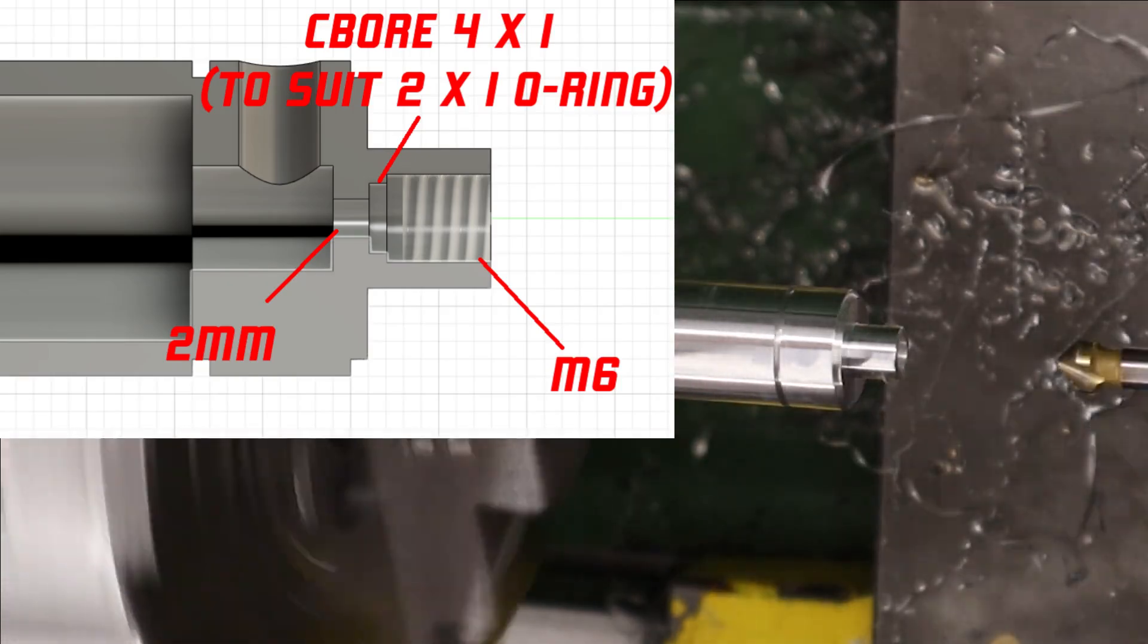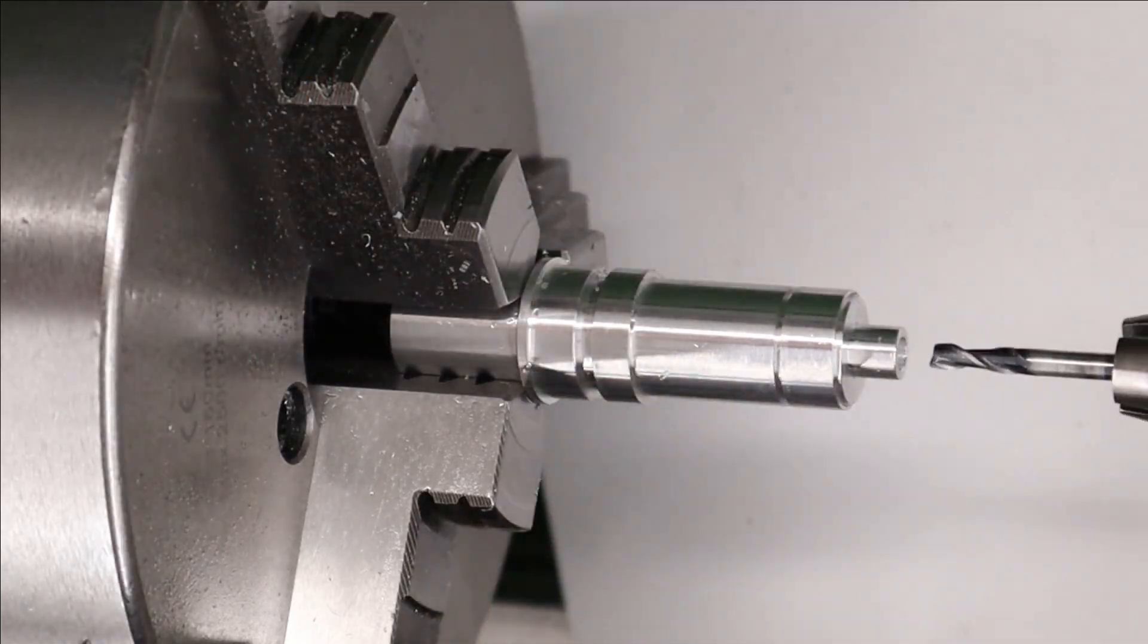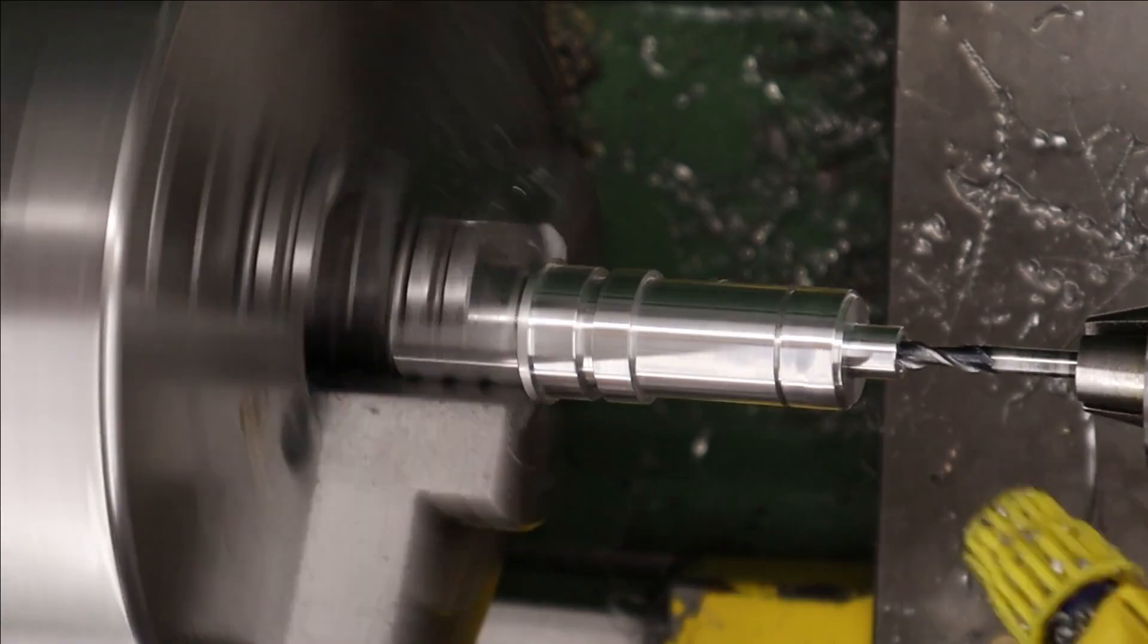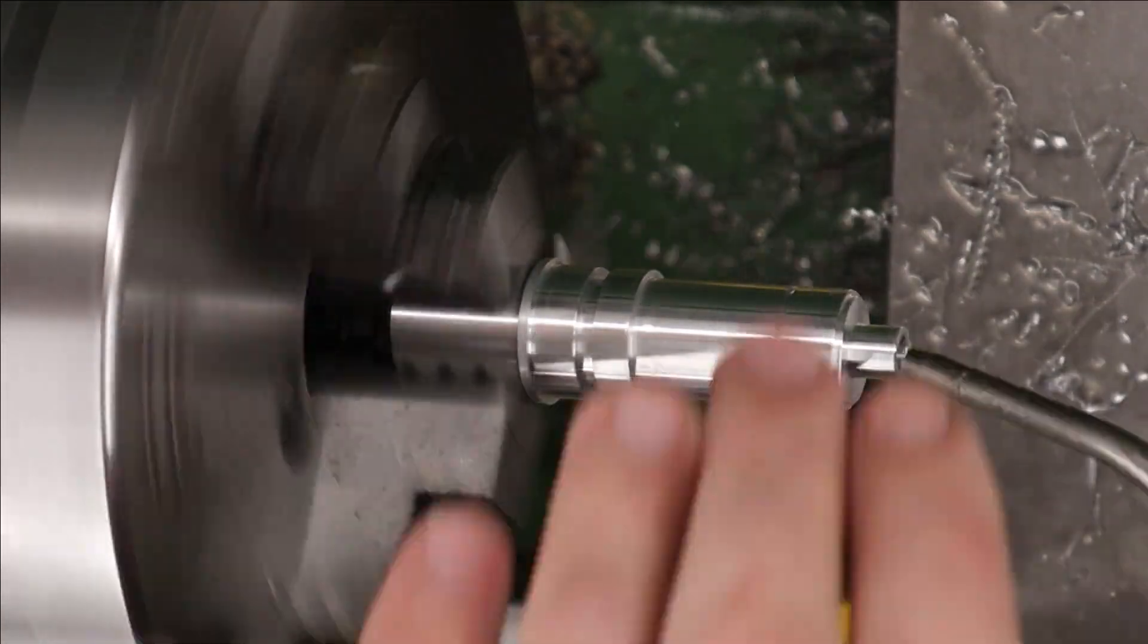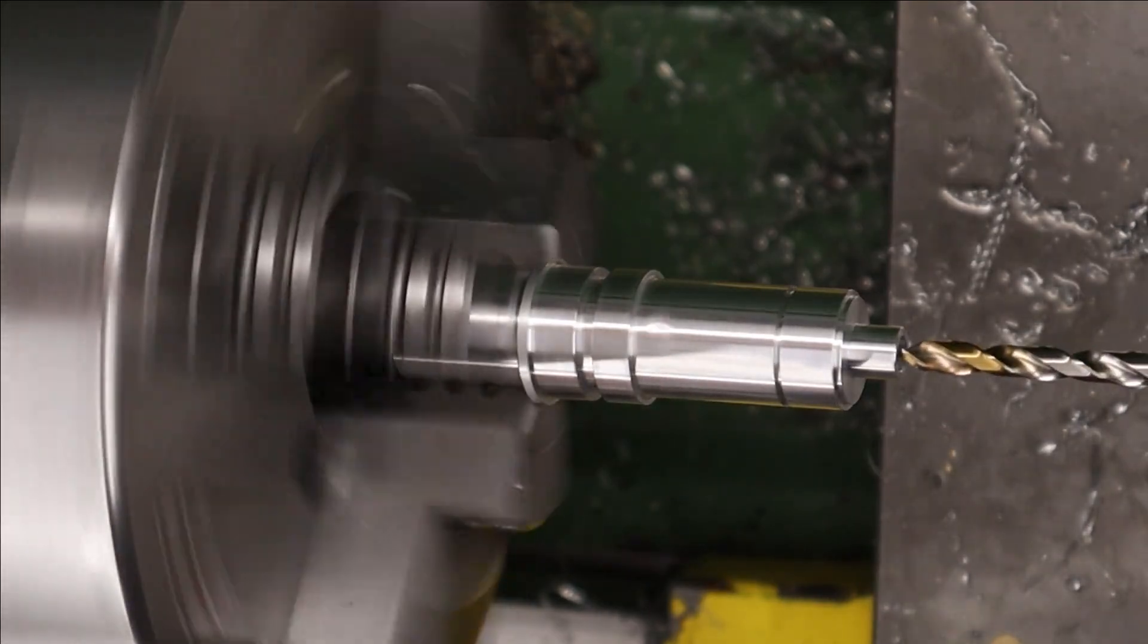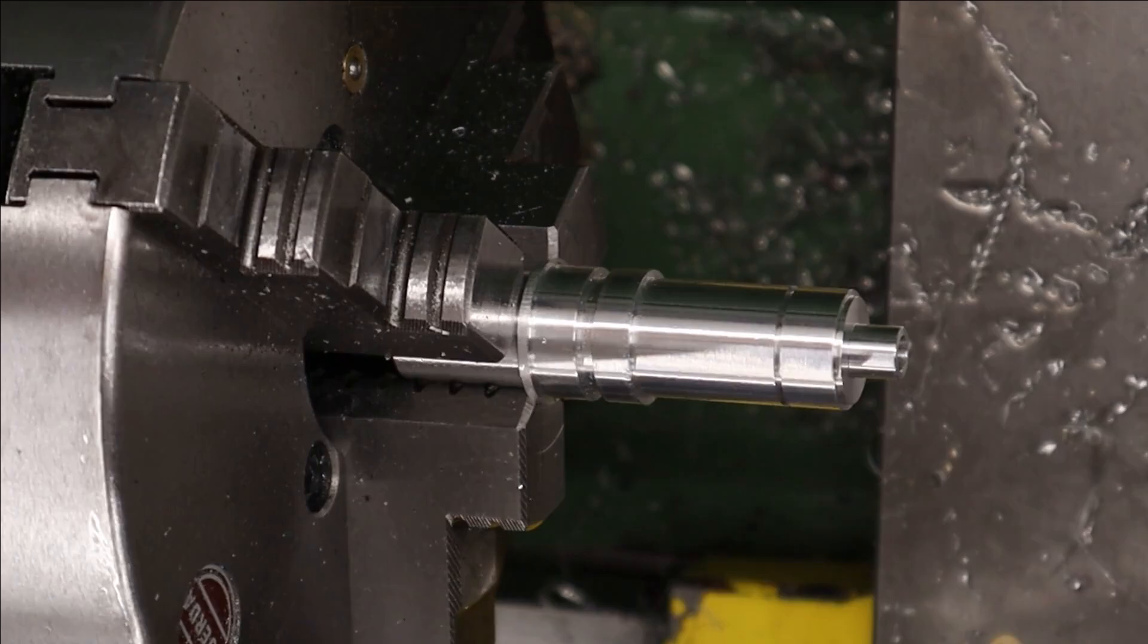With that done we can come back with a four millimeter end mill and create a small counter bore where the o-ring will sit. We're using a four millimeter end mill in this case as we're going to be creating a flat bottom hole which the o-ring can sit against. With that done we can finally tap the end M6 and then test fit this small brass nut that I made off camera.